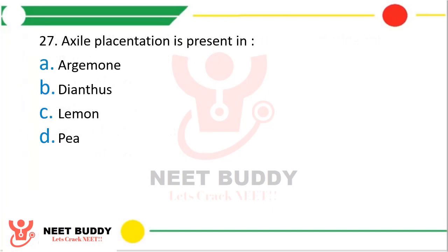Question 27: Axile placentation is present in Argemone, Dianthus, lemon, or pea. The correct answer is option C, lemon.